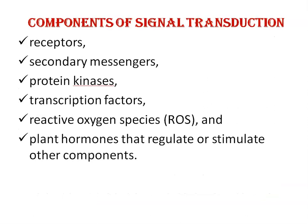Now, components involved in signal transduction. While building elegant, complicated, and interconnected regulating networks, a huge number of components are involved both in animals as well as in plants — like receptors, secondary messengers, protein kinases, transcription factors, reactive oxygen species, and plant hormones that regulate or stimulate other components.